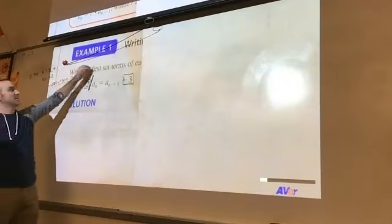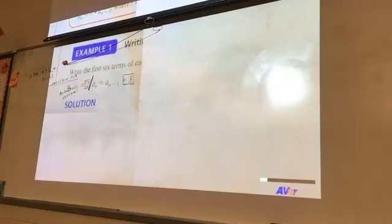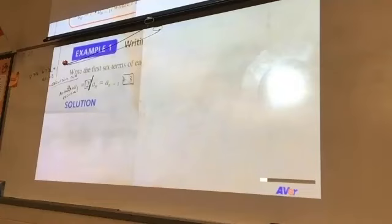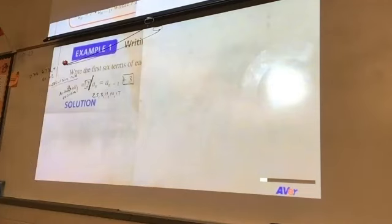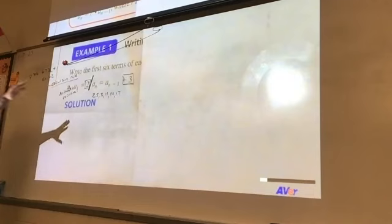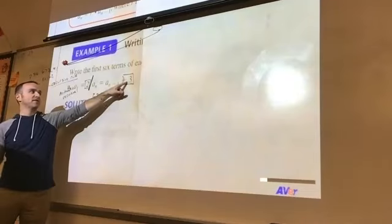So the type of question you're going to see here — write the first six terms. I just want you to write the first six terms of this sequence. We know where we're starting, we know what we're doing every time. There are our first six terms — this is always our first term, they tell us where we're starting, they tell us what we're doing every time. We're adding three every time.